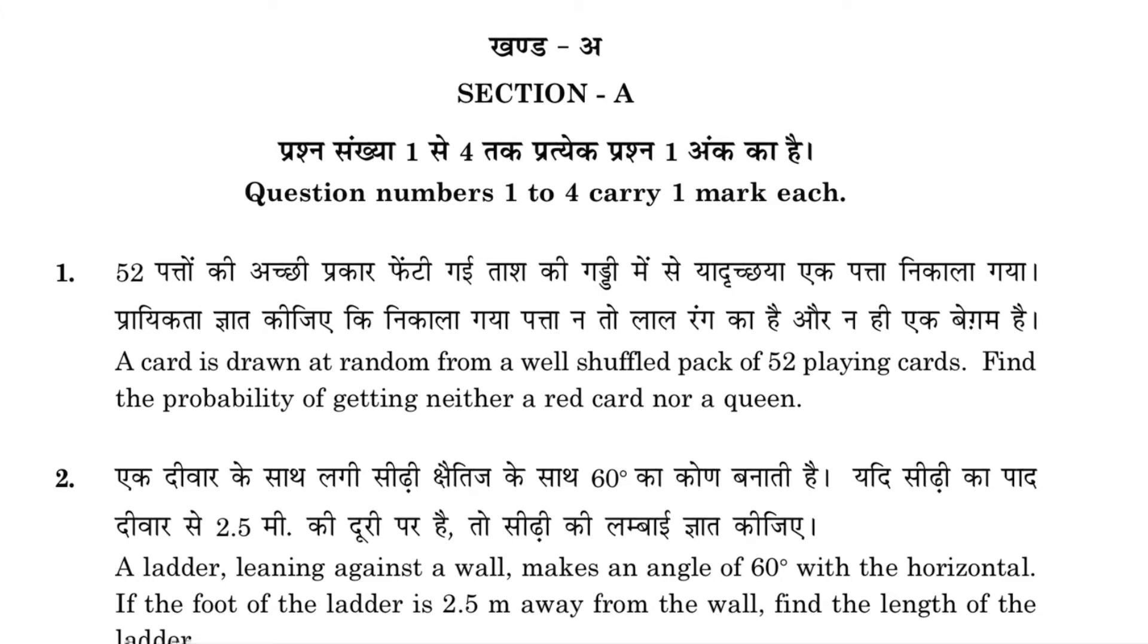Question number one: A card is drawn at random from a well-shuffled pack of 52 playing cards. Find the probability of getting neither a red card nor a queen. Total number of cards is 52.